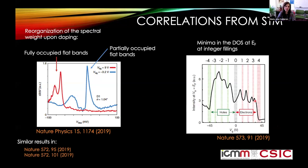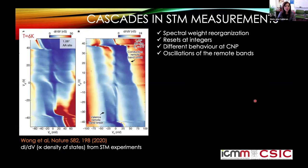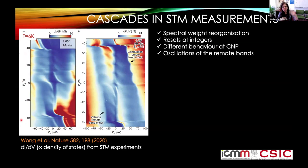Later in 2020, beautiful experiments showed a strong reorganization of the spectral weight. In these plots, the horizontal axis is bias voltage, exploring the spectrum from the chemical potential, while the vertical axis is gate voltage, controlling the doping. There is a spectral weight reorganization with resets at integer fillings — periodic resets showing cascade-like changes in the spectral weight. A different behavior is also seen at the charge neutrality point.